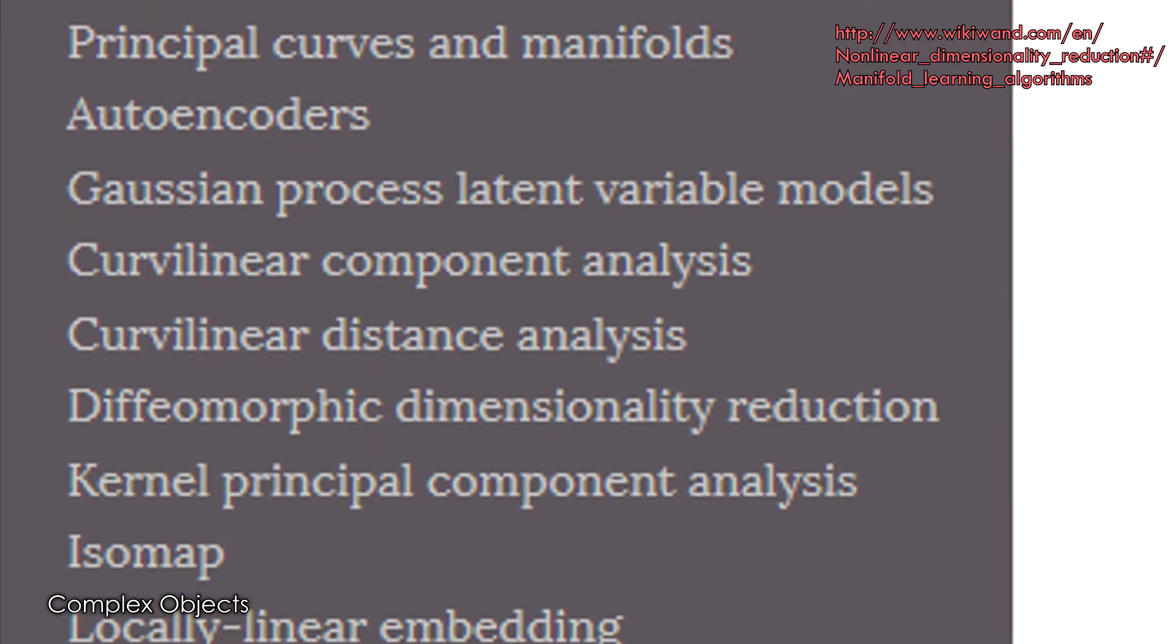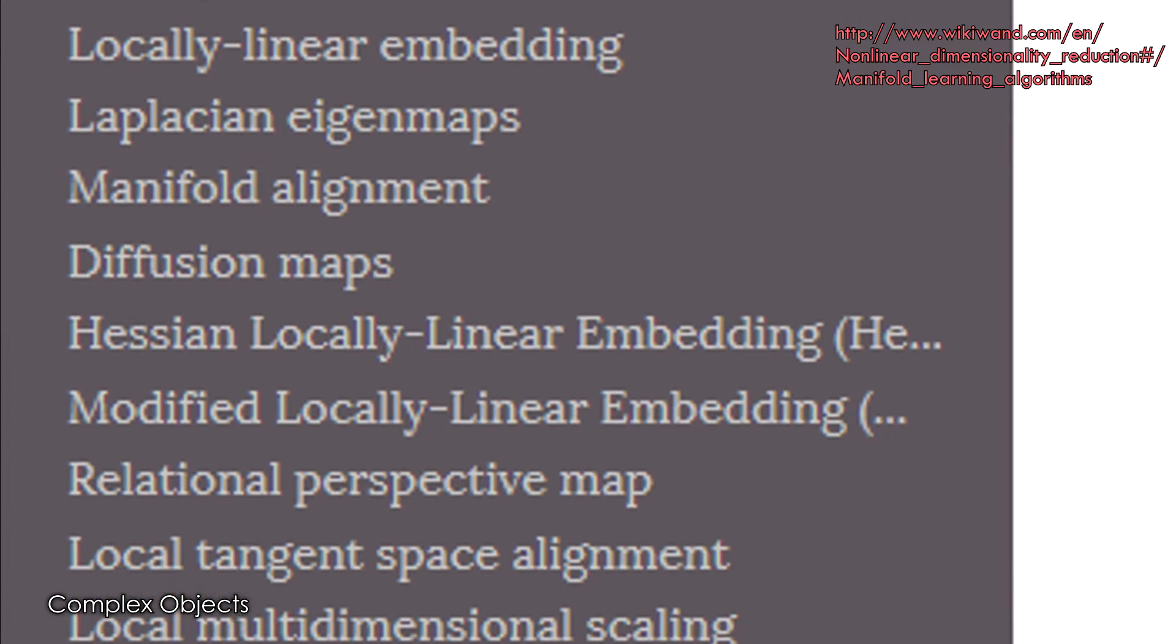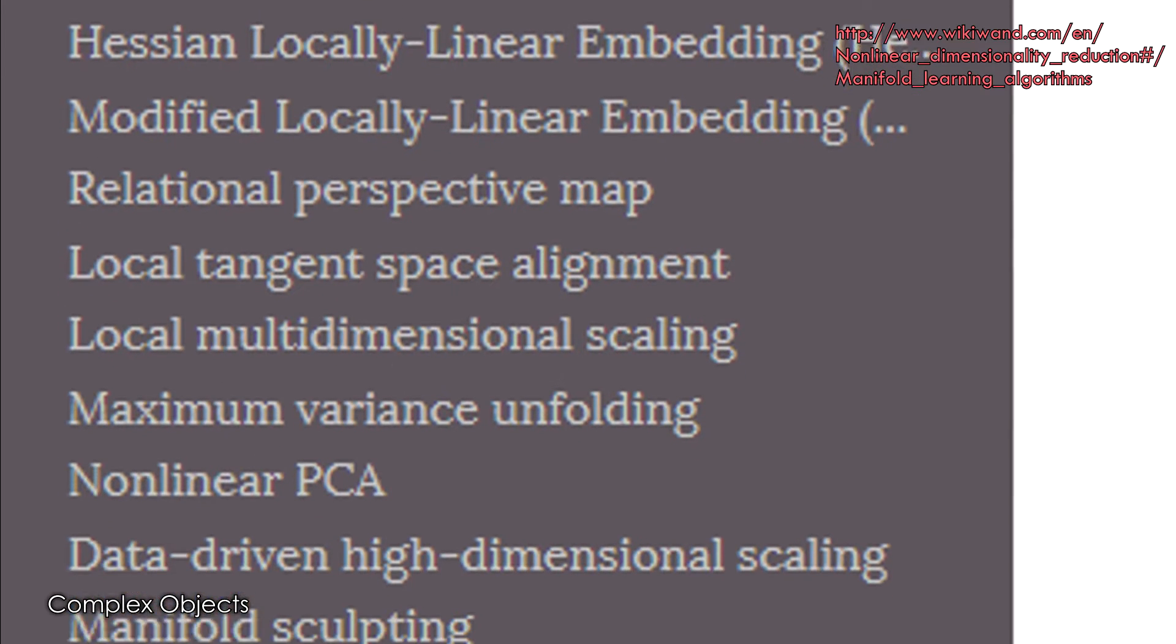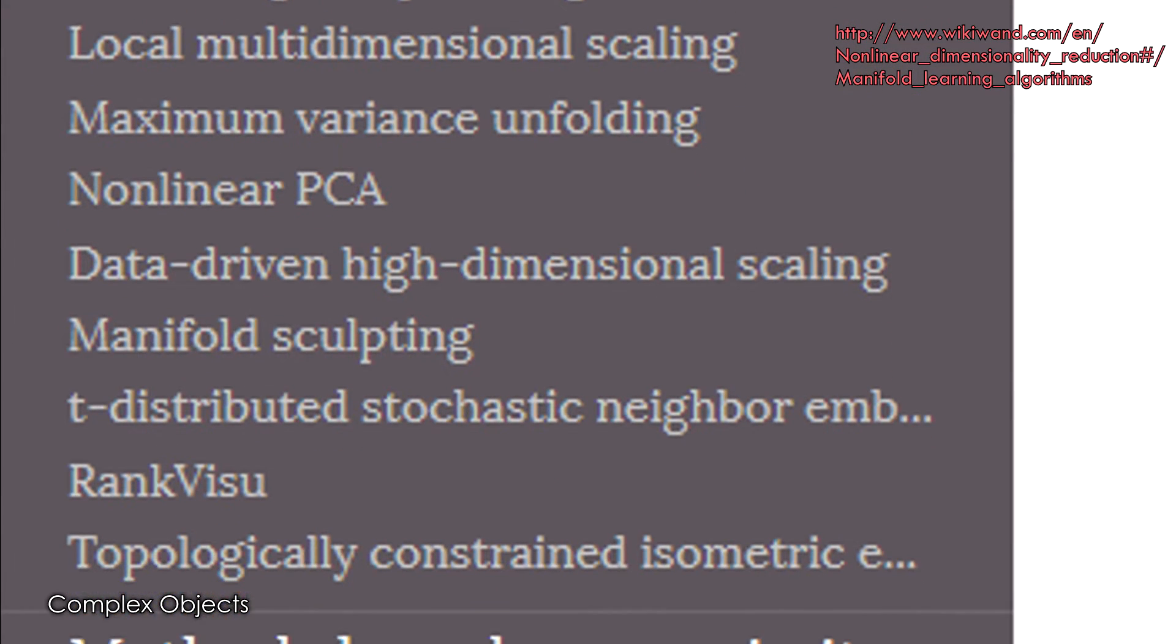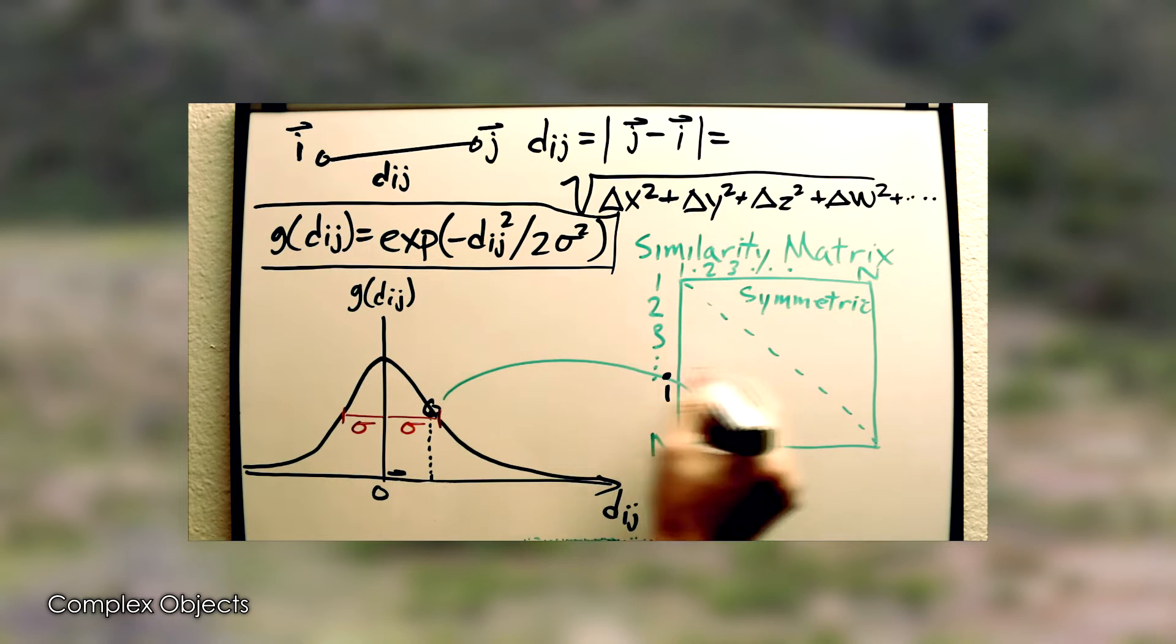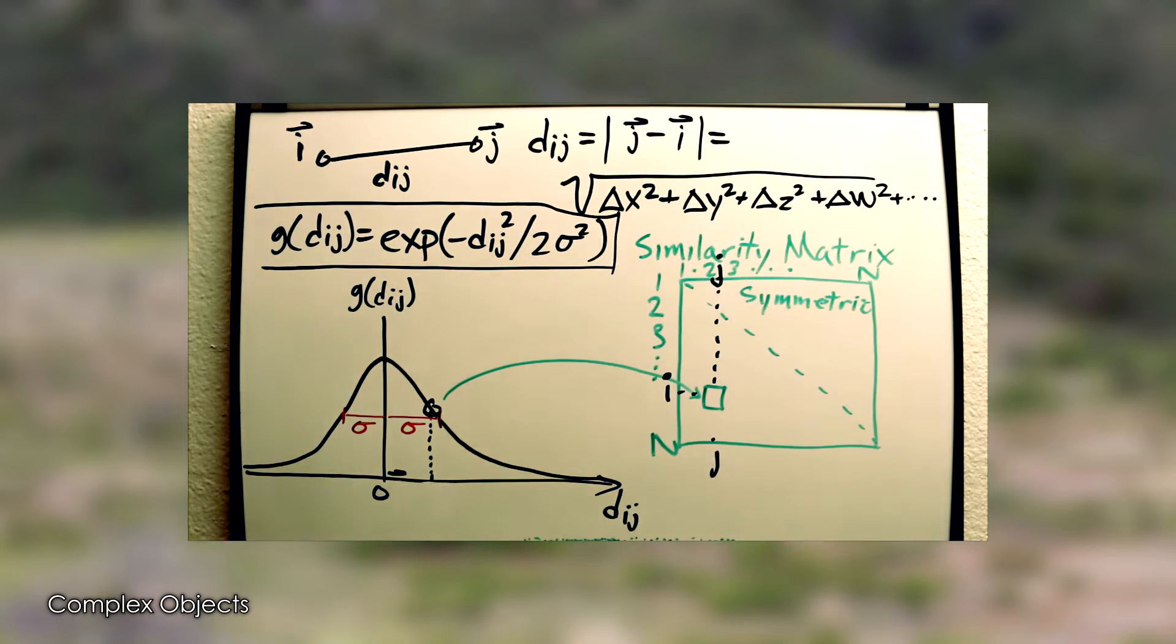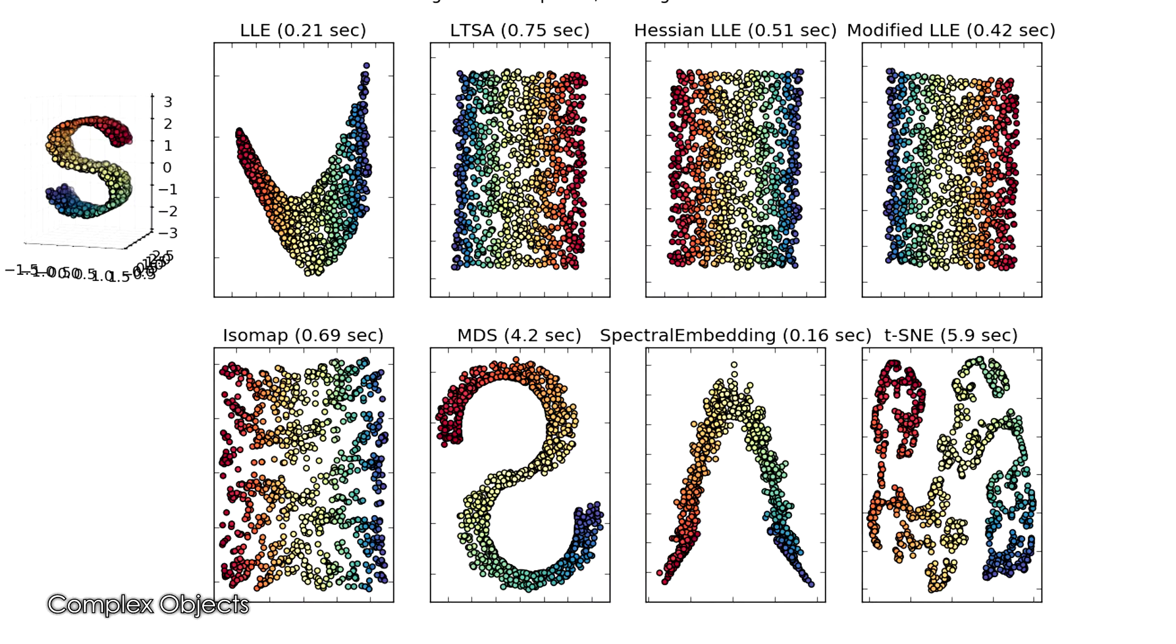There's a large number of dimensionality reduction algorithms which are diverse in their initial steps, but they all tend to converge on the same final step. That final step involves taking the eigenvectors of your similarity matrix or a matrix which is analogous to a similarity matrix. What oftentimes differentiates these algorithms is how you compute that similarity matrix.